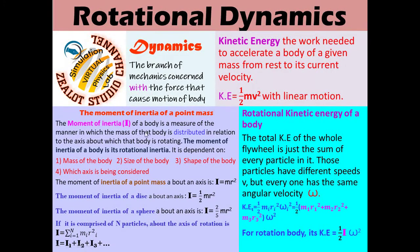Welcome to the moment of inertia at a point mass. The moment of inertia I of a body is a measure of the manner in which the mass of the body is distributed in relation to the axis about which that body is rotating. The moment of inertia is also called rotational inertia, and it depends on the mass of the body, the size and shape of the body, and which axis is being considered.